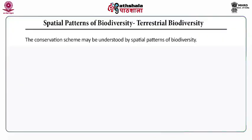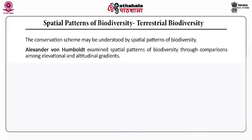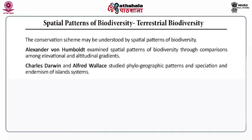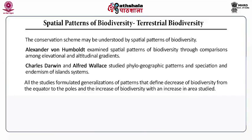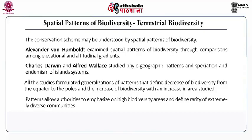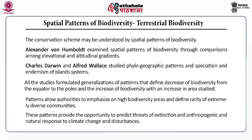Terrestrial biodiversity. The conservation scheme may be understood by spatial patterns of biodiversity. Alexander von Humboldt examined spatial patterns of biodiversity through comparisons among elevational and altitudinal gradients. Charles Darwin and Alfred Wallace studied the phylogeographic patterns and speciation and endemism of island systems. All these studies formulated the generalization that biodiversity decreases from equator to the pole and increases with an increase in the area studied. Patterns allow authorities to emphasize high biodiversity areas and define the rarity of extremely diverse communities, and provide opportunities to predict the threats of extinction and responses to climate change and disturbances.